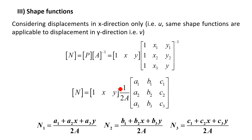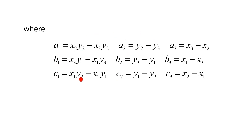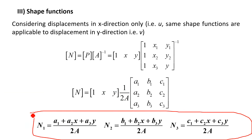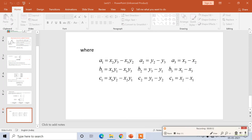Multiplying the row vector P with each column of the adjoint matrix gives the shape functions. N1 equals (A1 plus A2·X plus A3·Y) divided by 2A. N2 equals (B1 plus B2·X plus B3·Y) divided by 2A. N3 equals (C1 plus C2·X plus C3·Y) divided by 2A. Where A1, B1, C1 and so on are the respective cofactors. These are the shape functions for the three-noded CST element. I hope all of you have understood the derivation of shape functions for the CST element. Thank you very much.